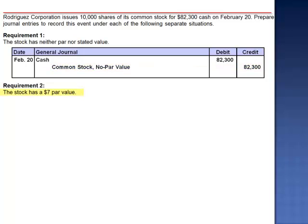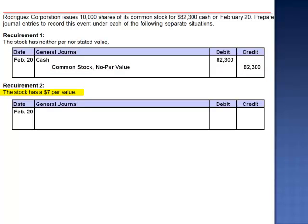Requirement 2. The stock has a $7 par value. The impact on the accounting equation is the same. We're still increasing assets and increasing equity by $82,300.